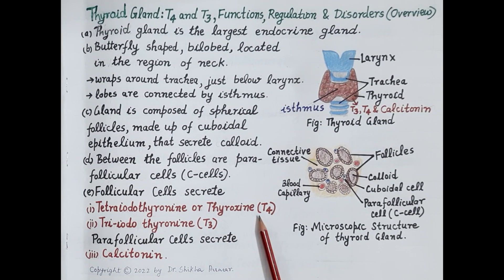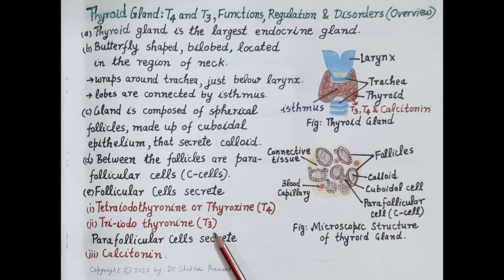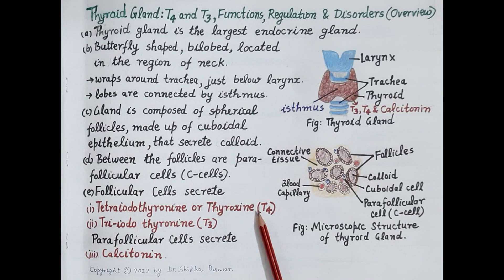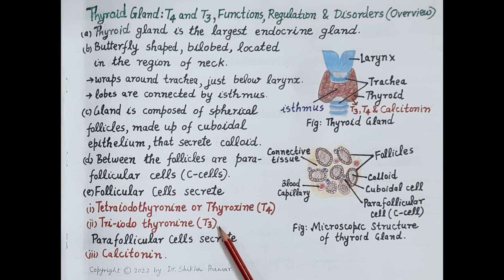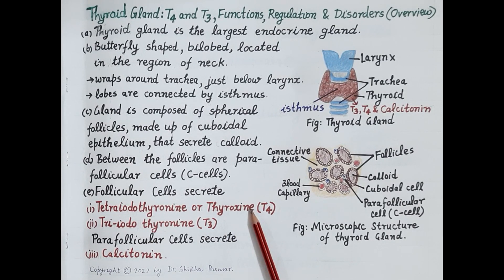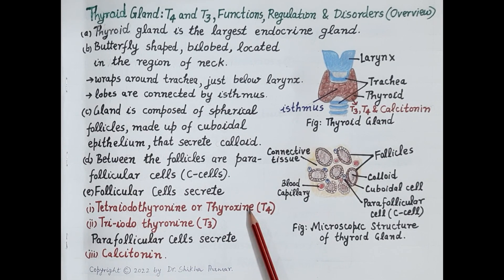T4 is the inactive form while T3 is the active form of thyroid hormone. 80% of thyroid hormone is produced as T4 while only 20% is produced as T3. However, in the body this inactive T4 is converted to active T3. T3 is produced by the removal of one iodine atom from T4 — this process is called deiodination, which occurs primarily in the liver and kidneys. The primary function of T3 and T4 is to regulate the basal metabolic rate of the body and they are therefore required for growth and development.